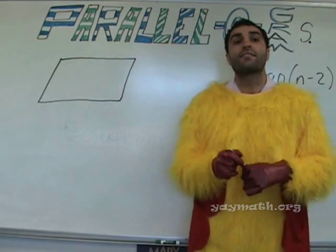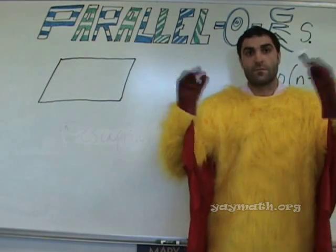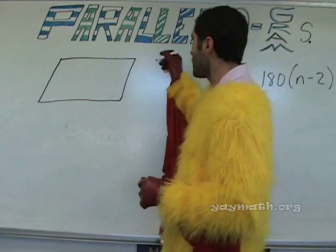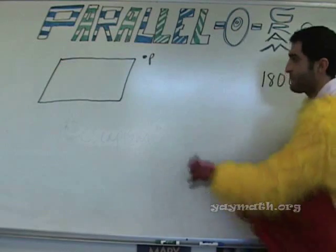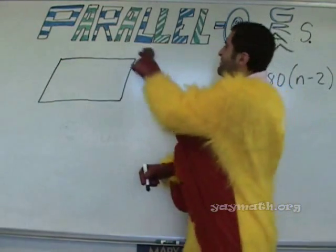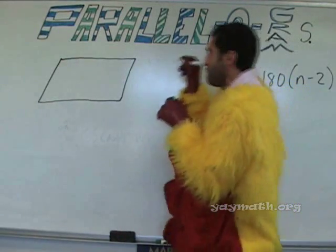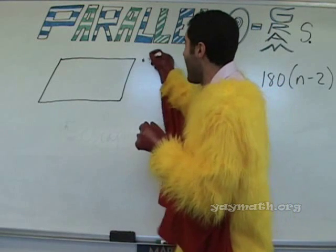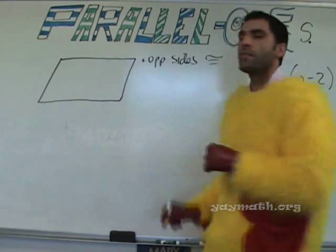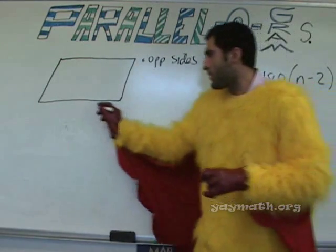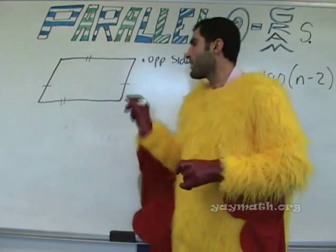What about this shape in particular? Would each side be equal to the opposite side? Cool, let's put that down. Opposite sides congruent. So this side is the same as this one, and this side is the same as this one.